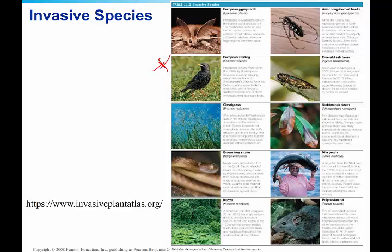Another example is kudzu, which is actually from Japan. The US Soil Conservation Service introduced it in the 1930s to help with erosion control. But it grows at about a hundred feet in one season. If you travel down south, although it is now in New England also, you can see old homes and buildings completely covered with it.